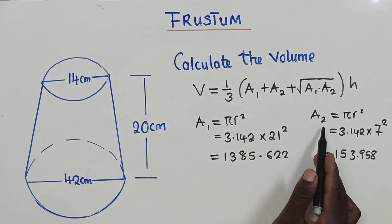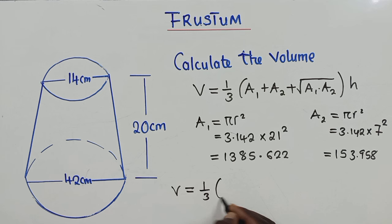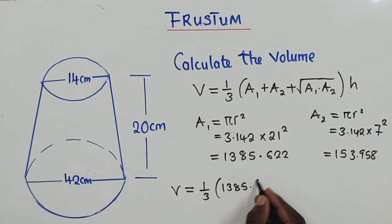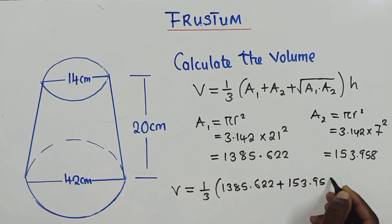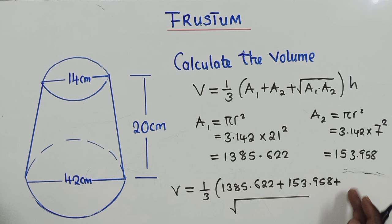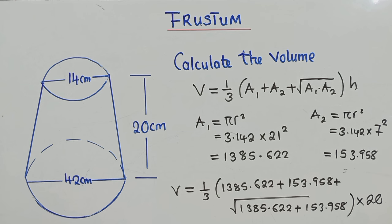So now, since we have A1 and A2, we can plug them in our formula. So we'll say volume is equal to 1 over 3. Here we are putting our A1 plus our A2 plus the square root of A1 times h. Our h is the height from here to here. It's 20.